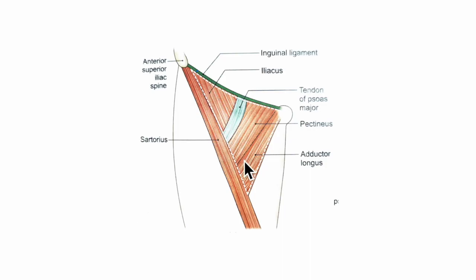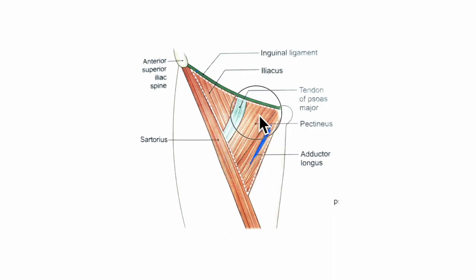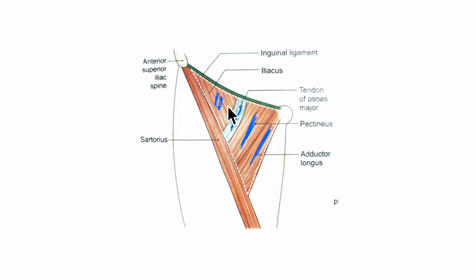The floor of the femoral triangle is formed medially by the adductor longus and pectineus muscle, and laterally by the psoas major and iliacus muscle.